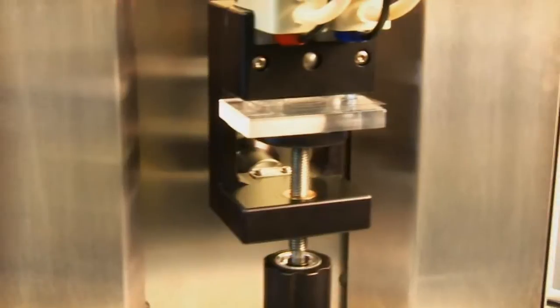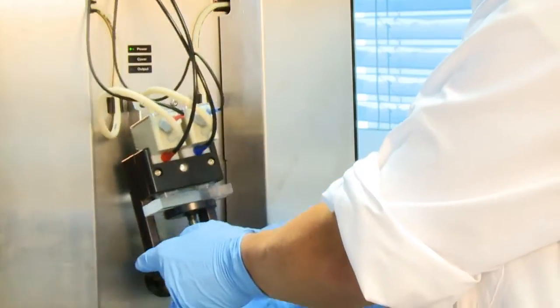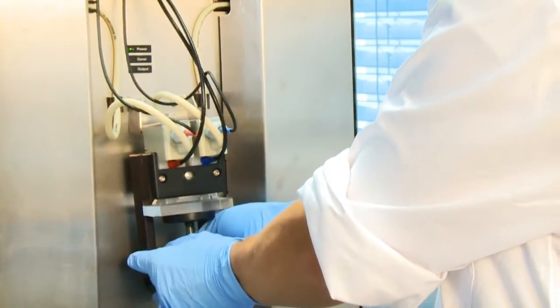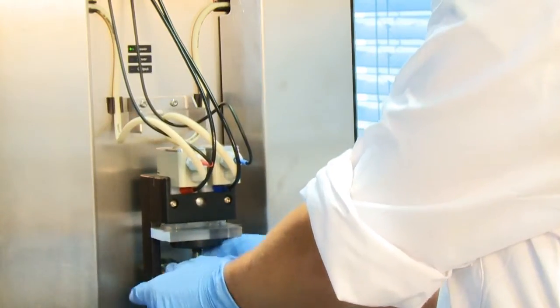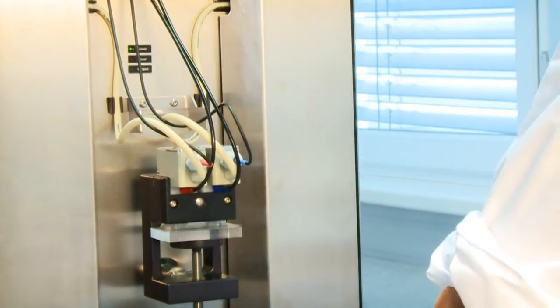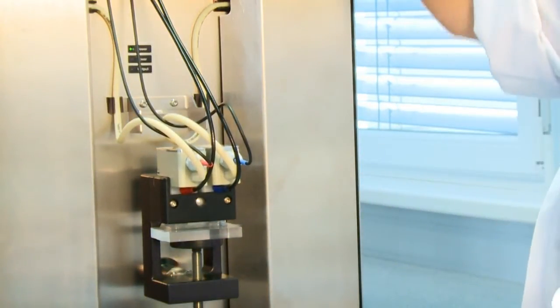This is the clamping cell for the Surpass Electrokinetic Analyzer. It's a measuring cell for analyzing flexible surfaces such as polymer foils or rigid samples such as semiconductor wafers.